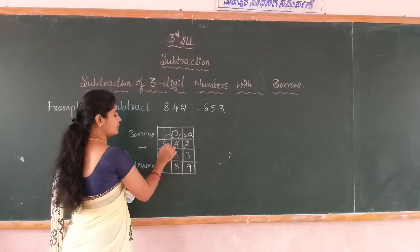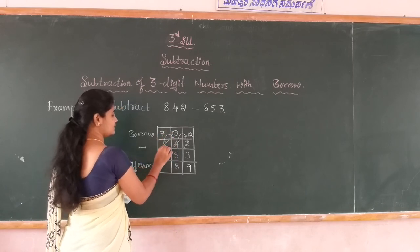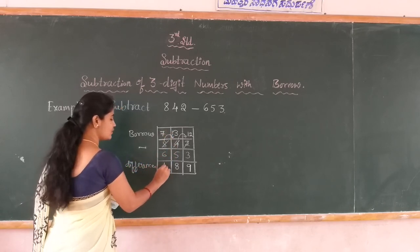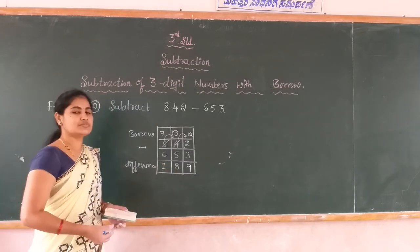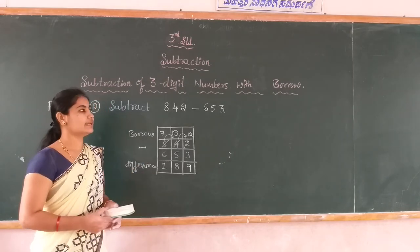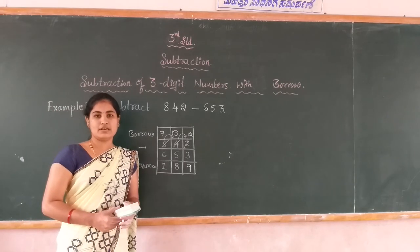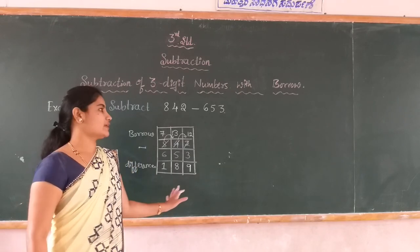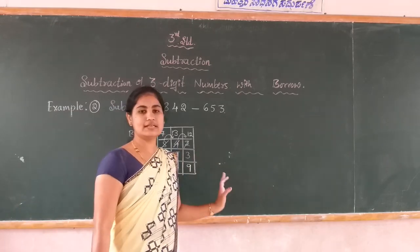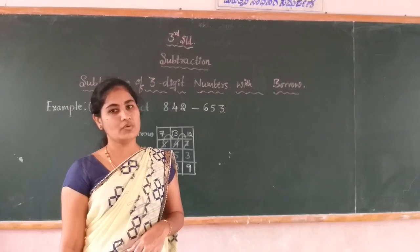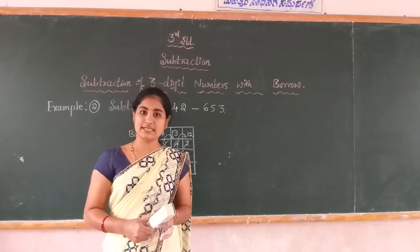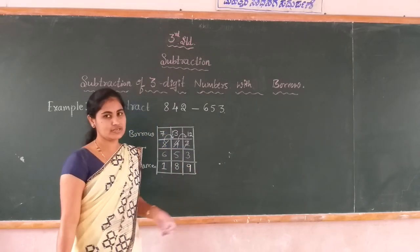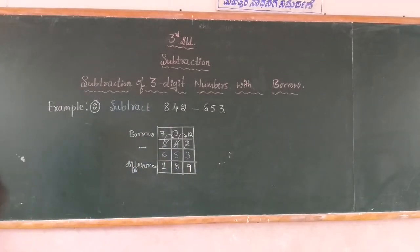8 gives one borrow to the 3, so 8 becomes 7. Therefore 7 minus 6 is 1. Dear students, this is the subtraction of three digit numbers with borrow. This is the subtraction method of three digit numbers with borrow and also without borrow. In the next class we will discuss statement problems of three digit numbers and the functions of subtraction. Thank you.